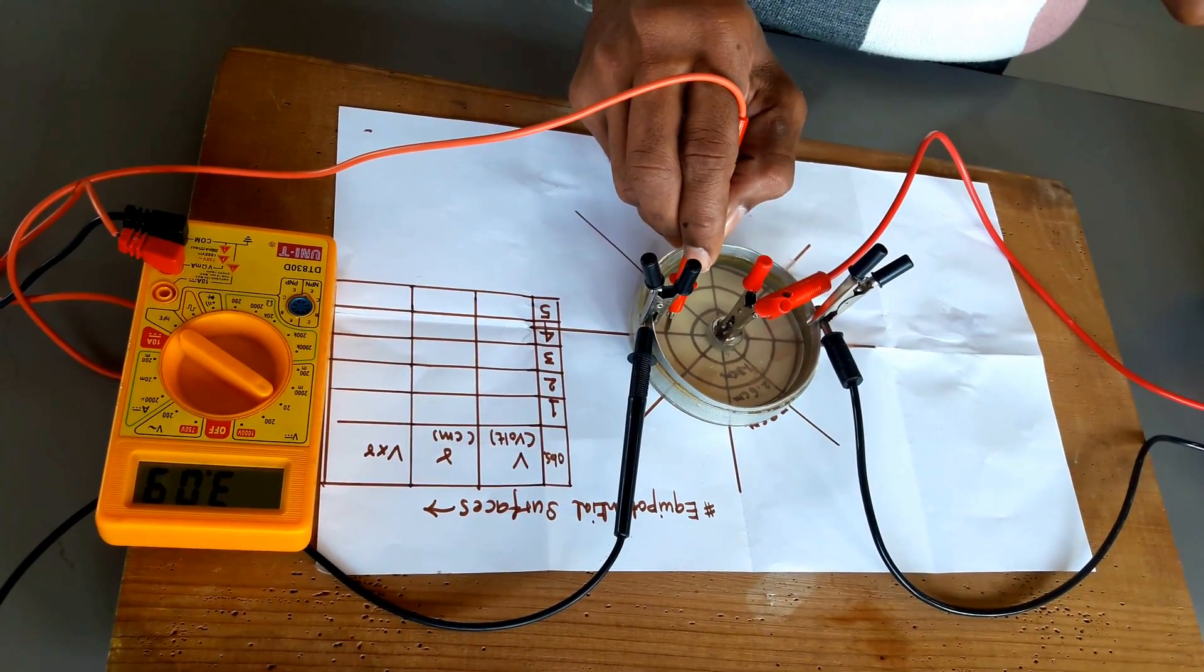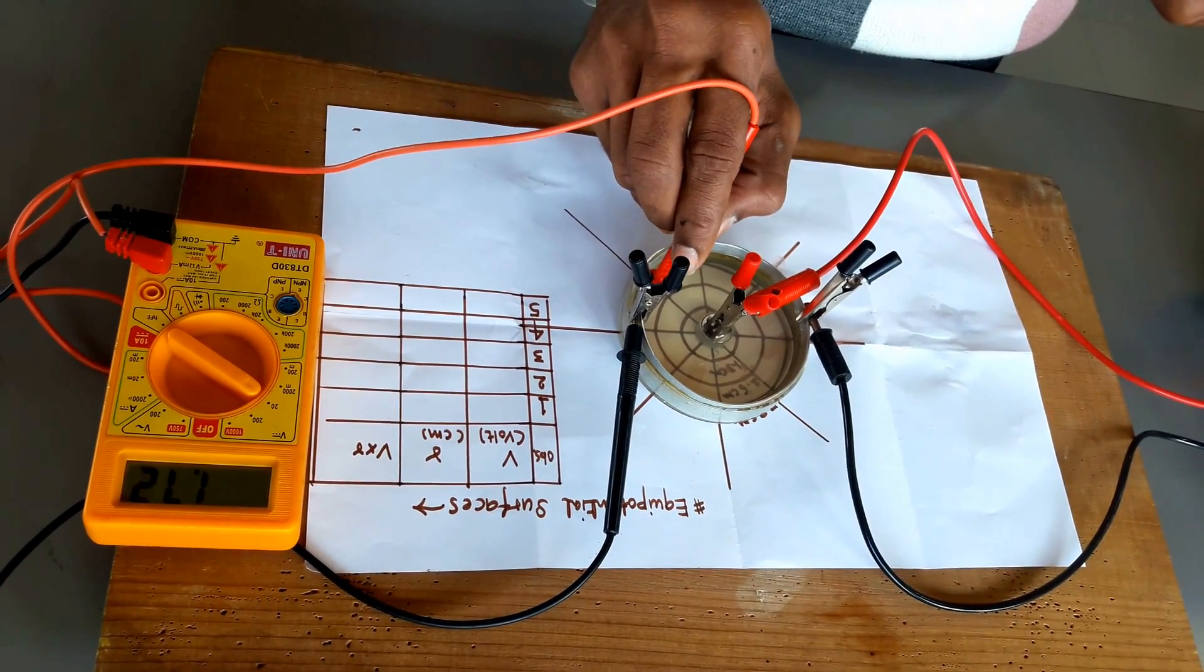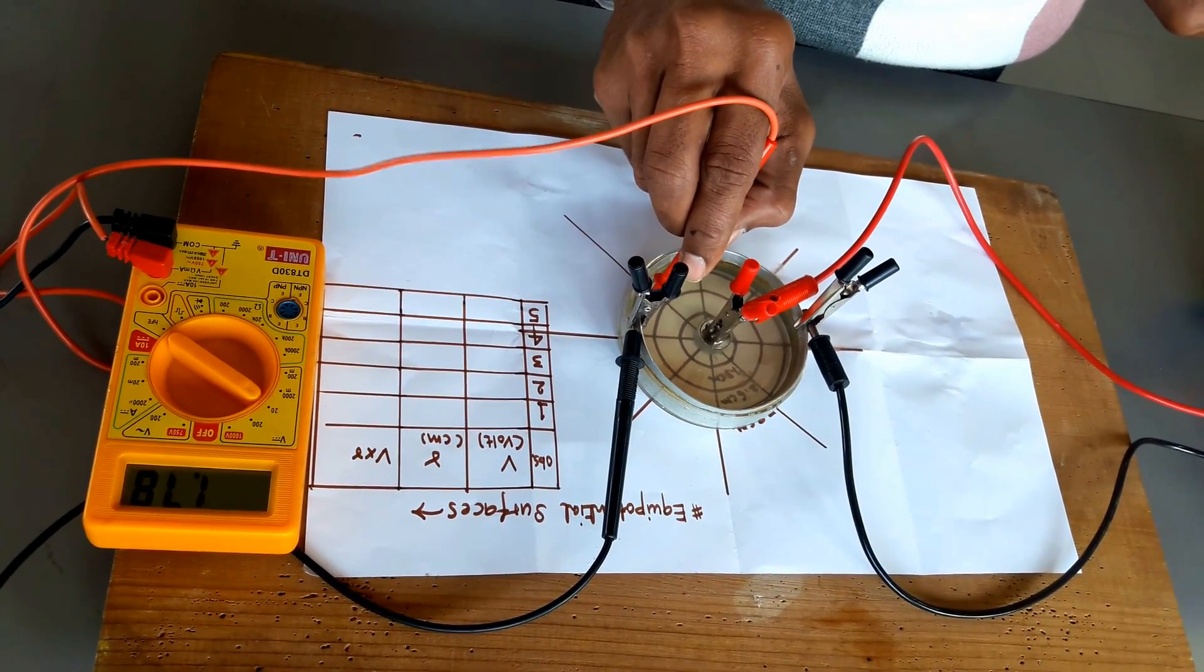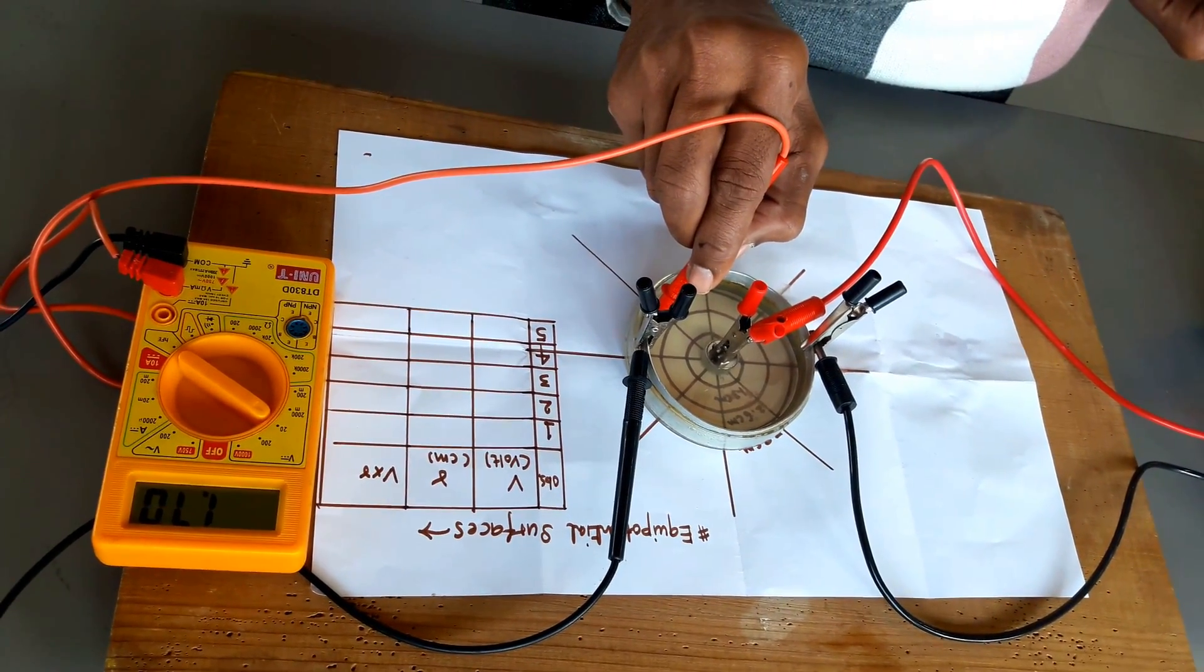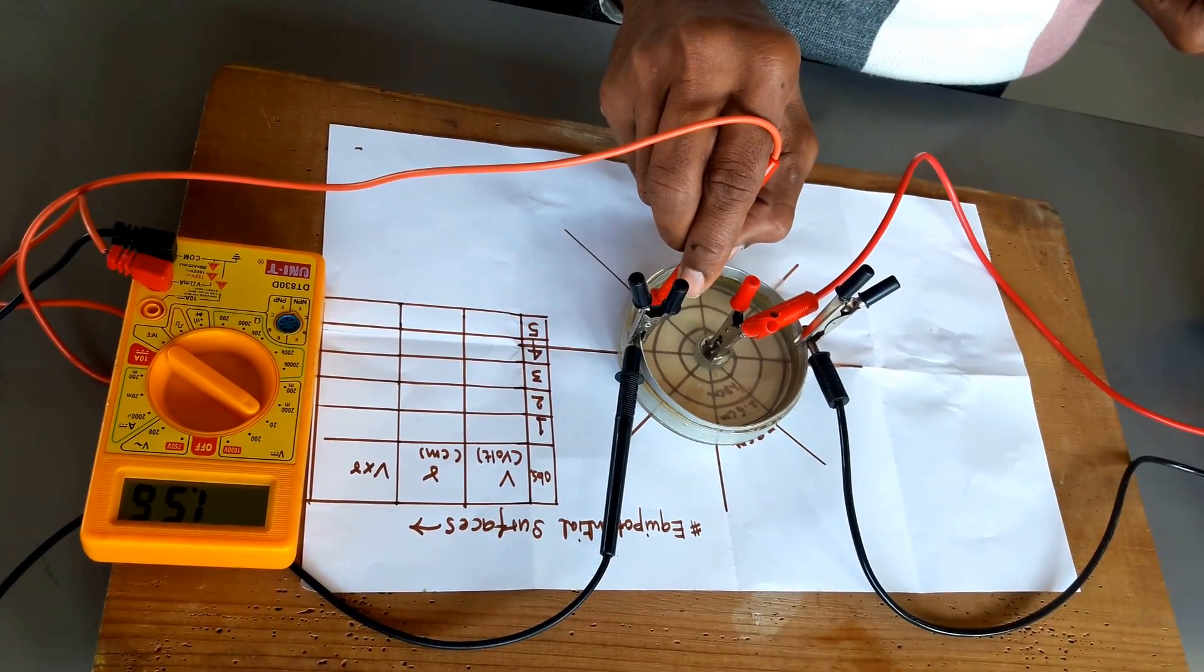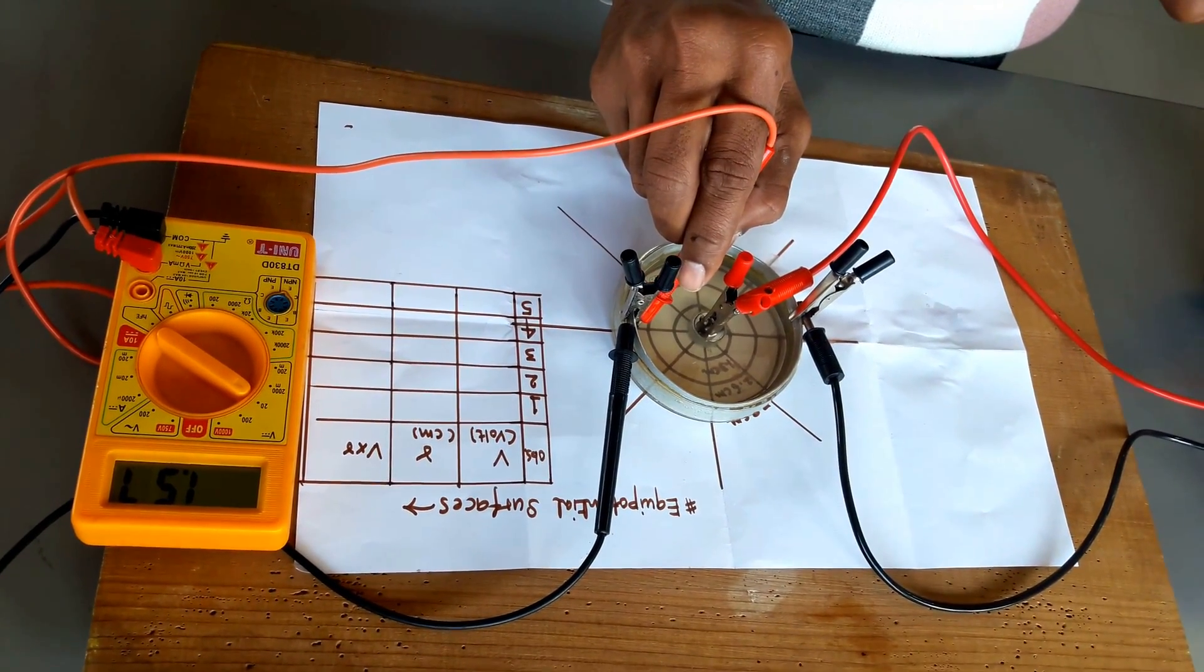Now let us approach towards the third circle. Here also we are able to find the voltage has reduced, the potential has become on an average 1.6 to 1.7.